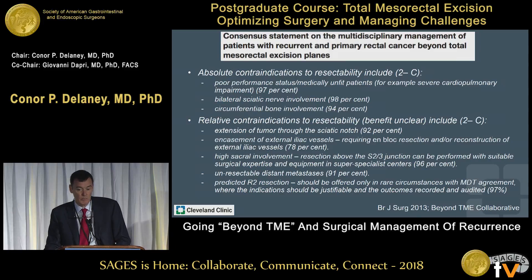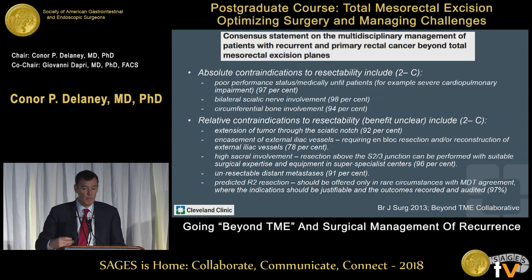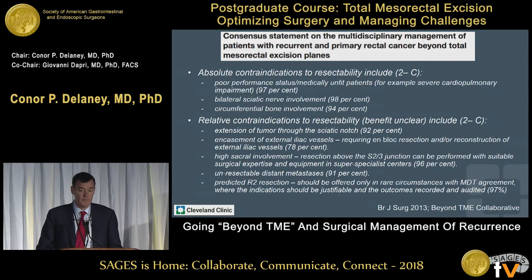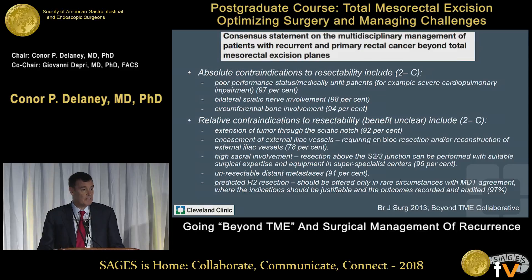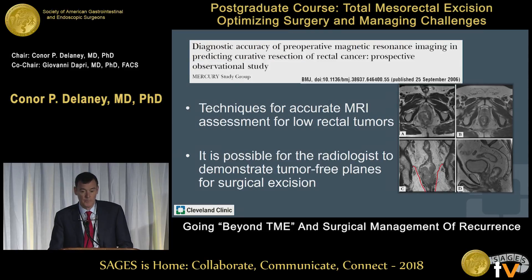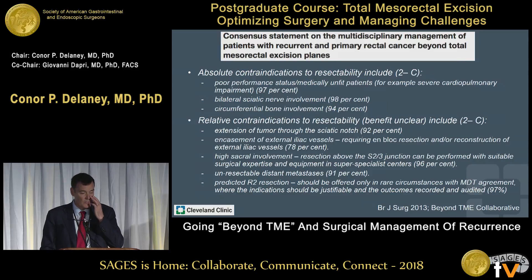The absolute contraindications to resectability include poor performance status — beyond TME operations are generally not done on unfit people. Bilateral sciatic nerve involvement, circumferential bone involvement, and relative contraindications include tumor going through the sciatic notch, encasement of the external iliac vessels requiring en-bloc resection, high sacral involvement, unresectable distant metastasis, and a predicted R2 resection. You should be able to predict on preoperative imaging if you won't achieve an adequate margin — this is not something you find out in the operating room. A positive margin intraoperatively is a failure of preoperative management.